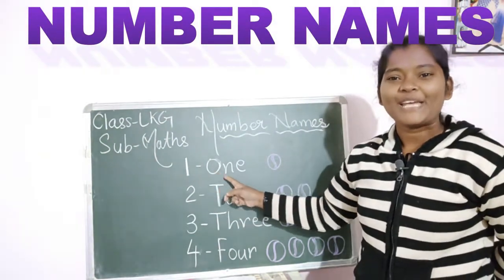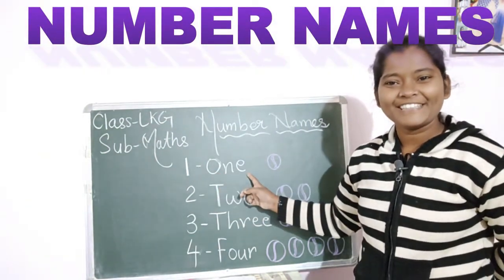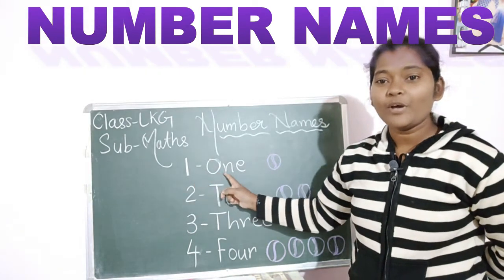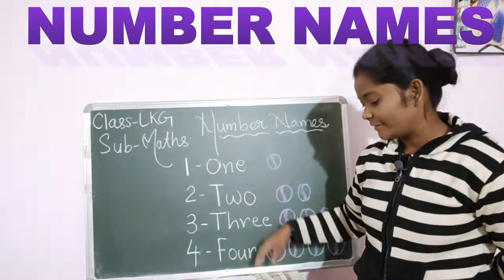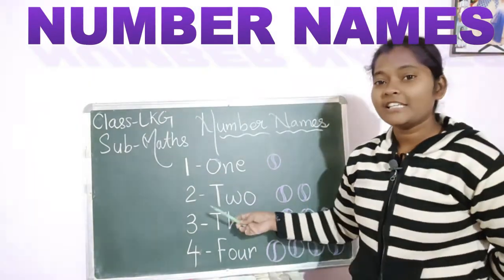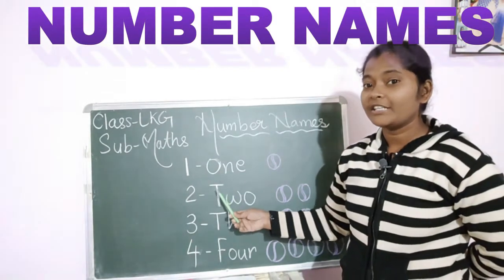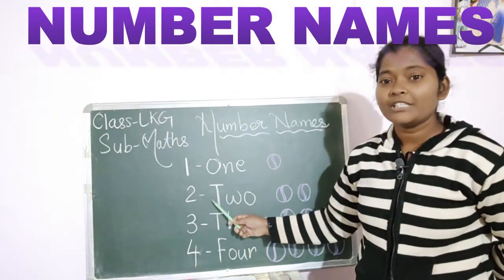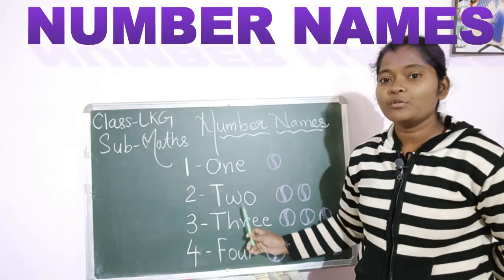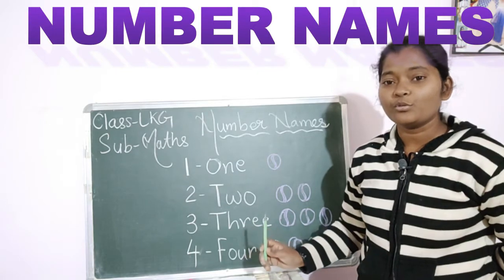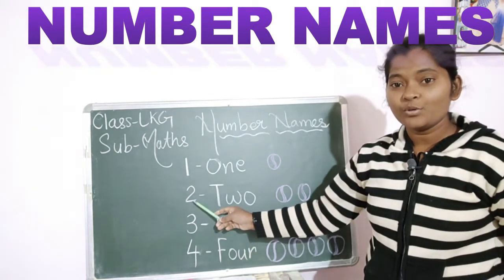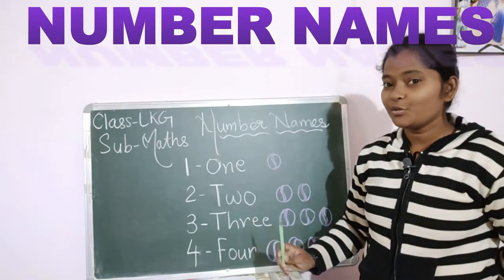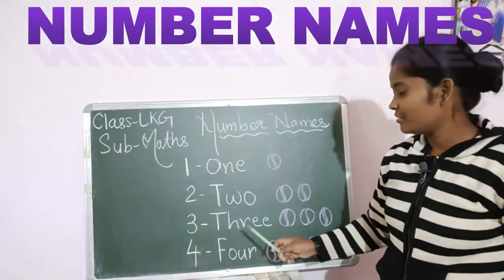1 — O-N-E — 1. Say children: 1 — O-N-E — 1. Very good. Now read the spelling of 2. Read: 2 — T-W-O — 2. Very good.